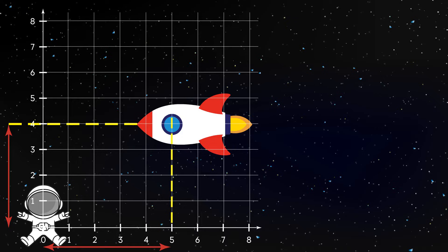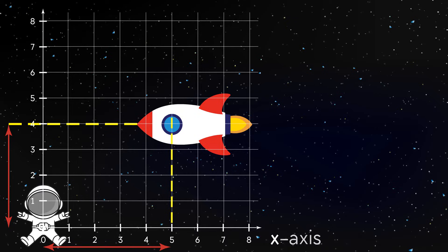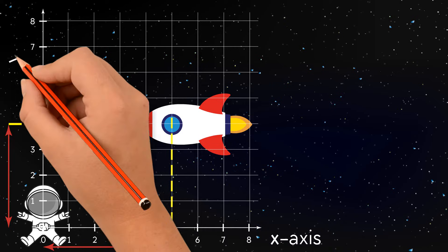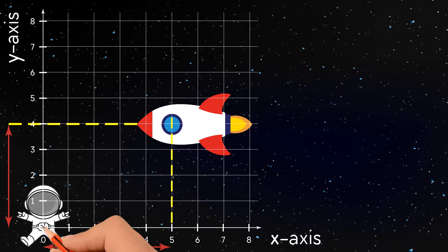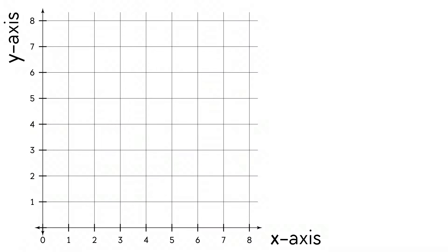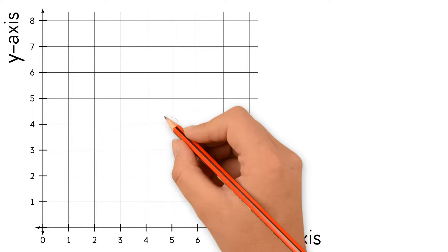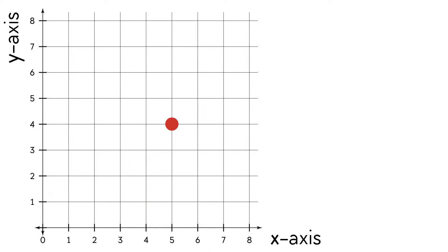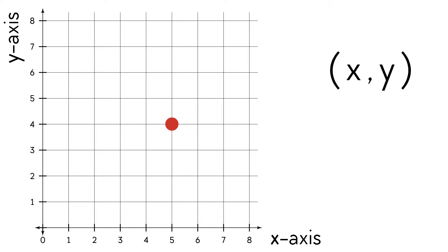It's basically graph paper, but this time we have an x-axis, which is the horizontal number line, and a y-axis, which is the vertical number line. Using this grid, we can find the location of any point. Each point on the coordinate grid is an ordered pair. We write it in terms of two coordinates: the x-coordinate and the y-coordinate.